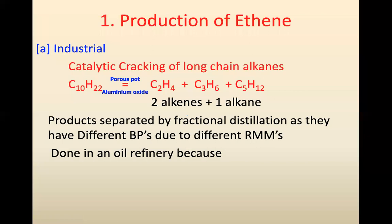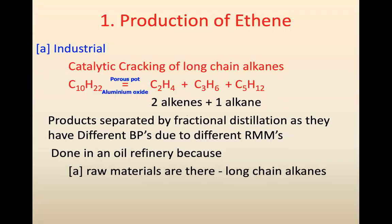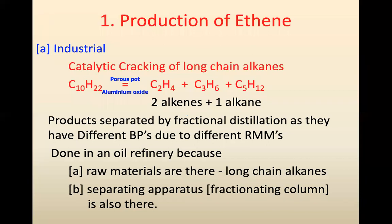The products are separated by fractional distillation because they have different boiling points due to their different relative molecular masses. This process is done in an oil refinery for two reasons. One, the raw materials are there, all the long chain alkenes. And remember that long chain alkenes make up the bulk of crude oil. But the demand is for short chain alkenes, like octane. So turning these long chain ones into short chain ones is economically very sensible. The second reason is because the separating apparatus, the fractionating column, is also there.